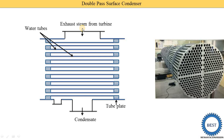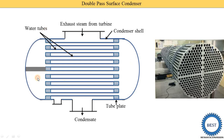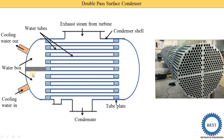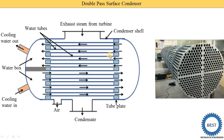Exhaust steam coming from the turbine is supplied into the condenser from the top part of the condenser, and at the bottom we collect the condensate — the liquid form of steam. This is called the condenser shell. Both ends of the shell are covered by using heads. On one head, baffle plates are installed to create the water box. Cooling water is supplied from the bottom of the head and exits from the top, and an air vent is provided to remove air using an air pump.